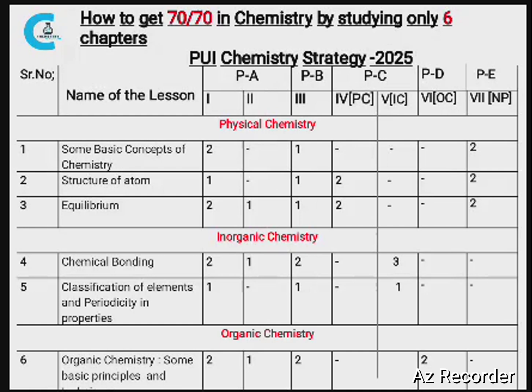For 2-mark questions in Part B, you have to write 5 out of the options given. From these 6 chapters: Some Basic Concepts of Chemistry — 1, Structure of Atom — 1, Equilibrium — 1, Chemical Bonding — 2, Classification of Elements — 1, Organic Chemistry/GOC — 2. So around 8 questions you will get, and you only have to answer 5. You have extra choices even if you remove one chapter.